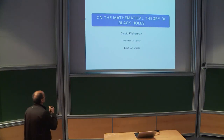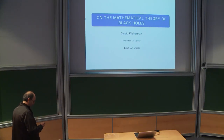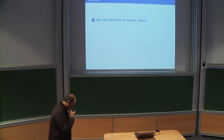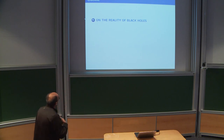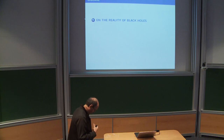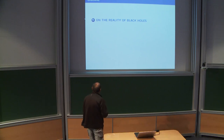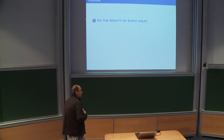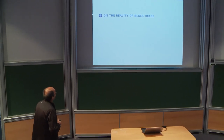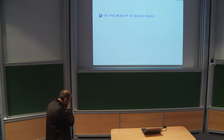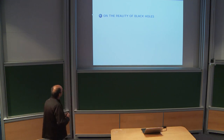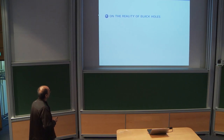This is a continuation of my lecture, so let me review very fast what we discussed at an introduction, in which I talked about the final state conjecture. The final state conjecture is a general conjecture about the large time behavior of general solutions of the Einstein equations in the asymptotically flat regime. It's a huge conjecture which contains many other simplified cases, but each one of these cases are huge conjectures themselves.